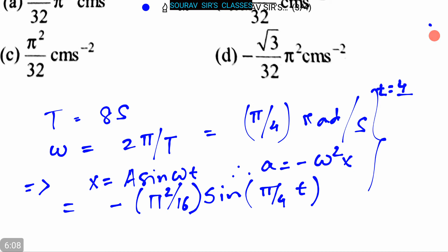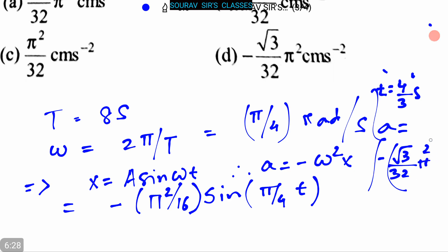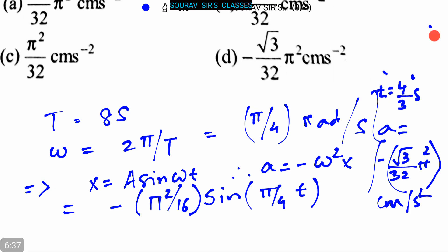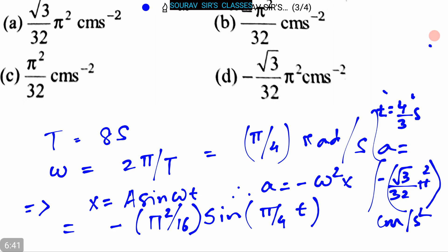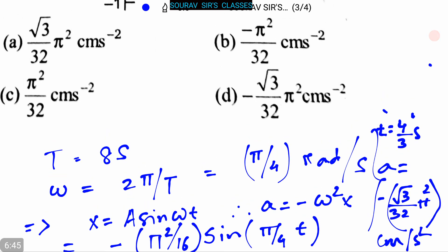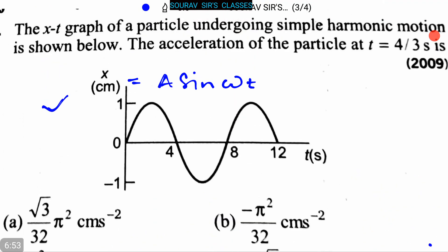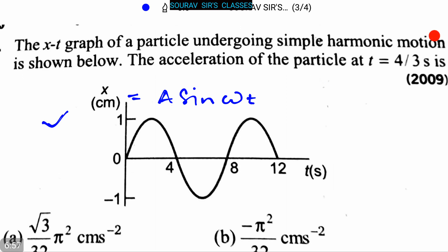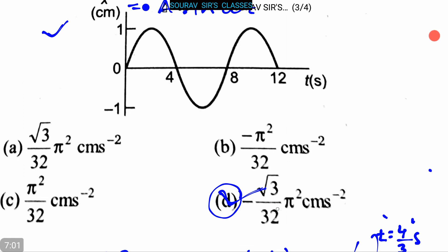We substitute t = 4/3 s into the expression. From this we get a = -√3/32 π² centimeter per second squared. So option D is the correct answer. The acceleration of the particle at t = 4/3 seconds is -√3/32 π² cm/s².